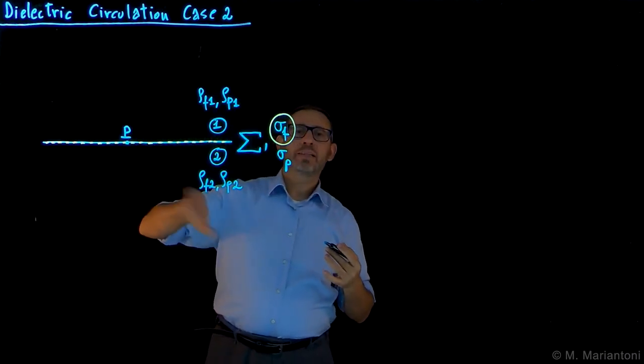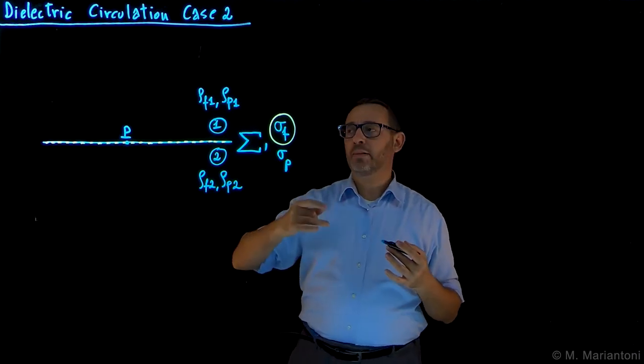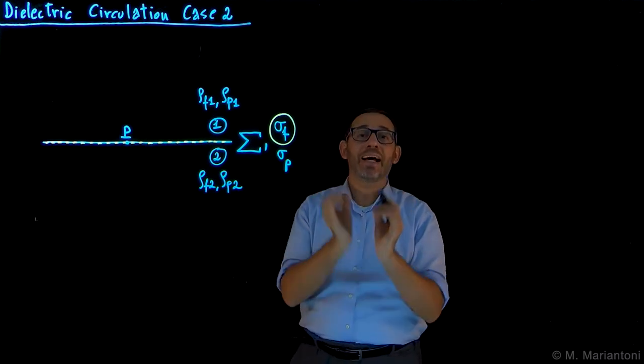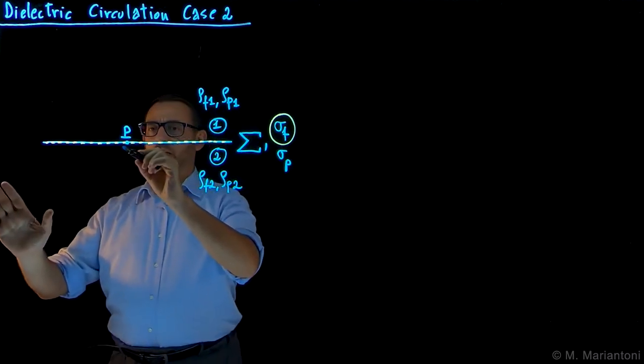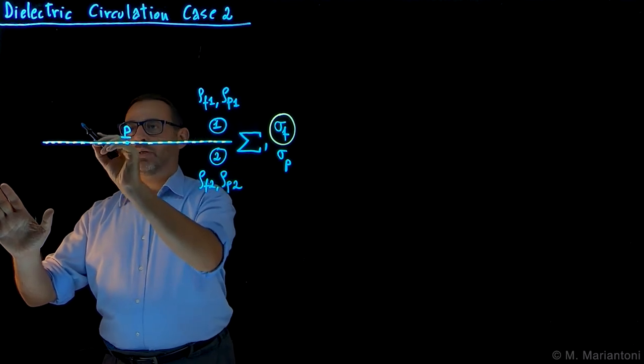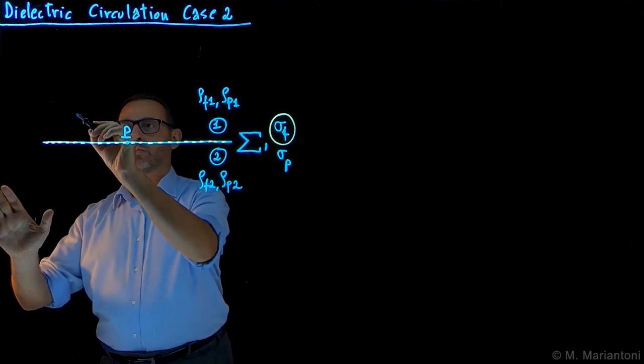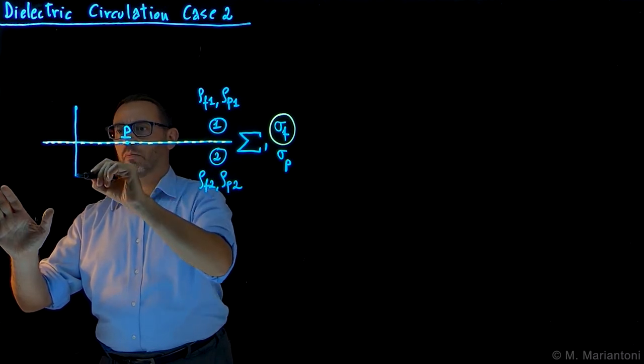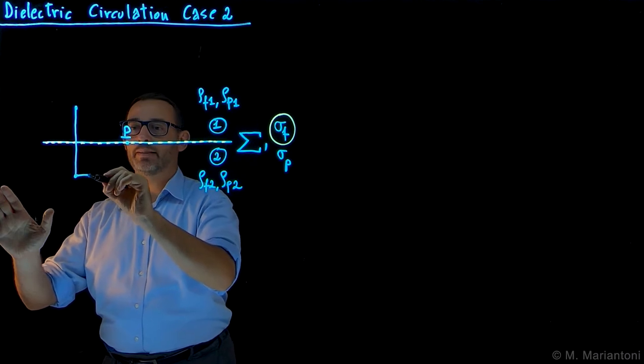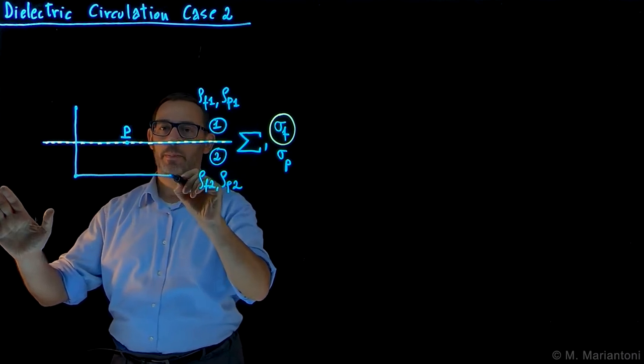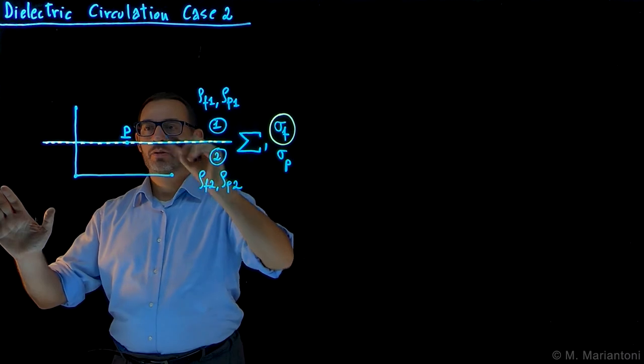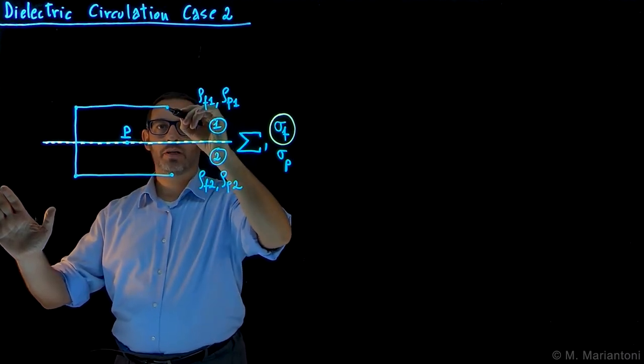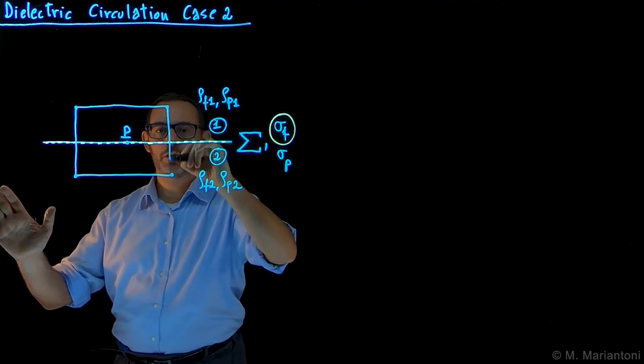In this case, we want to study the local properties of E, the electric field, for the circulation case 2. In order to do that, we need to define a cut-type line. The cut-type line will be something like this, a rectangle. Note that this is not a cylinder, it's just a line. Do not confuse it with the previous case, which was for Gauss's theorem. In that case, we need a closed surface. Here we need a closed line because we are doing circulations.